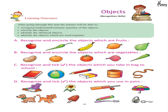A. Recognize and encircle the objects which are fruits. B. Recognize and encircle the objects which are vegetables. C. Recognize and tick the objects which you take in your bag to school. D. Recognize and tick the objects which you use in pairs.